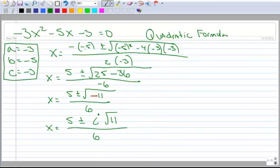This is a perfectly acceptable form to leave your answer in, and that will be fine. I could break that apart into two separate numbers if I wanted to. I could give each one a denominator, so 5 over 6, plus or minus, this is i times the square root of 11 over 6. Either one of these is a perfectly acceptable way to leave your answer.